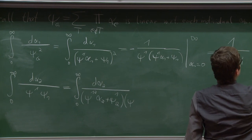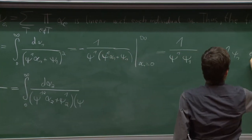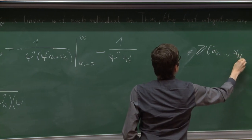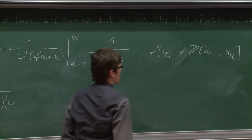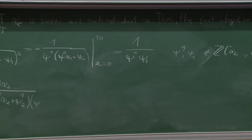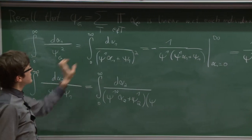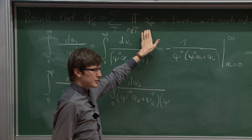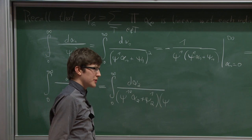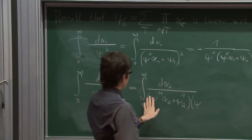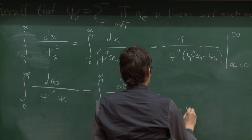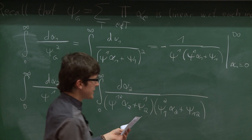psi^1 and psi_1 are the coefficients with respect to alpha_1, so they are still polynomials in the remaining variables. The important point is that these are linear in each variable. I only have linear terms here, so after the partial fraction decomposition the integral over alpha_2 yields a logarithm of psi^{12} times psi^2_1 over psi^{12} times psi_{12}.